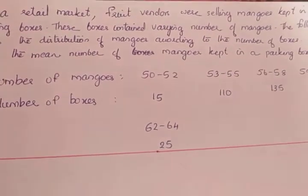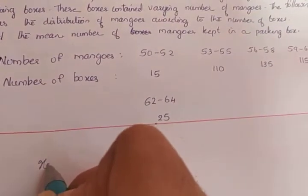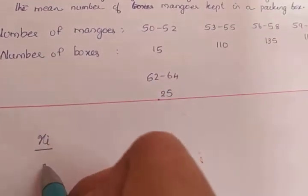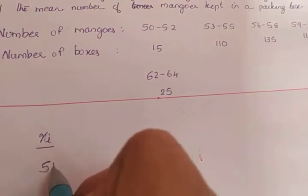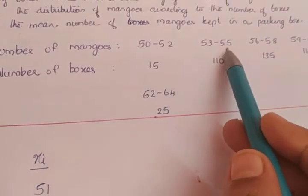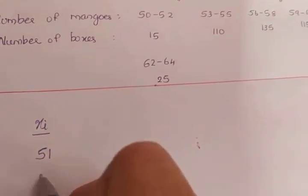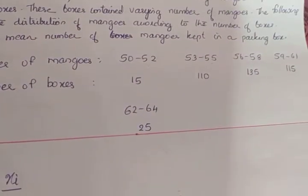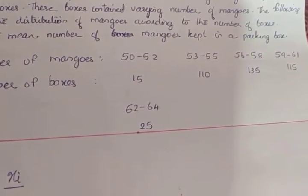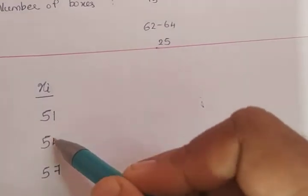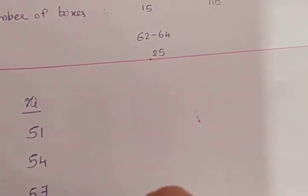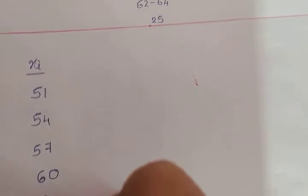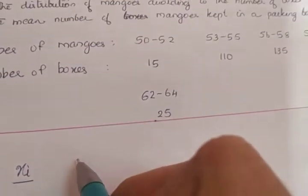For step deviation, we write xi as usual. 50 plus 52 divided by 2 gives 51; 53 plus 55 divided by 2 gives 54; 56 plus 58 divided by 2 gives 57. The difference between consecutive xi values is 3, so the next values are automatically 60 and 63.